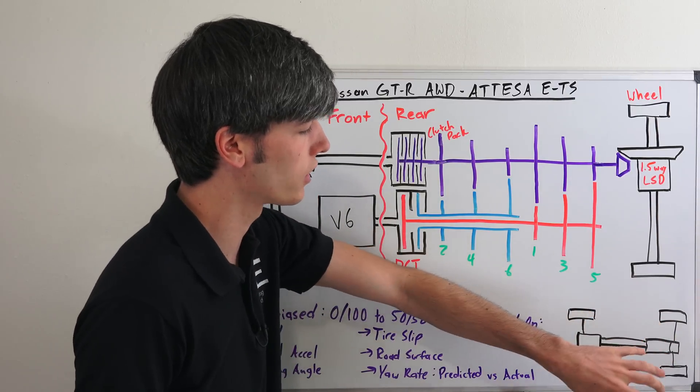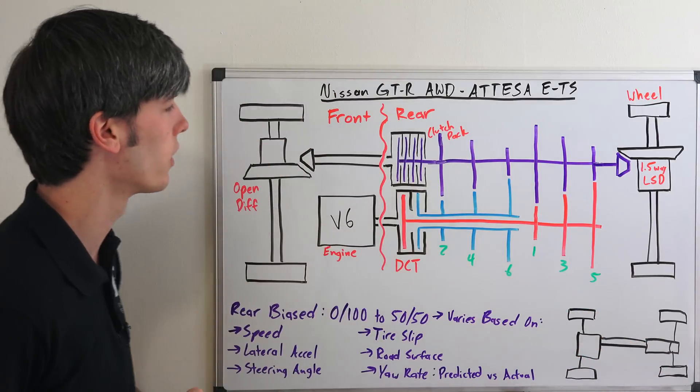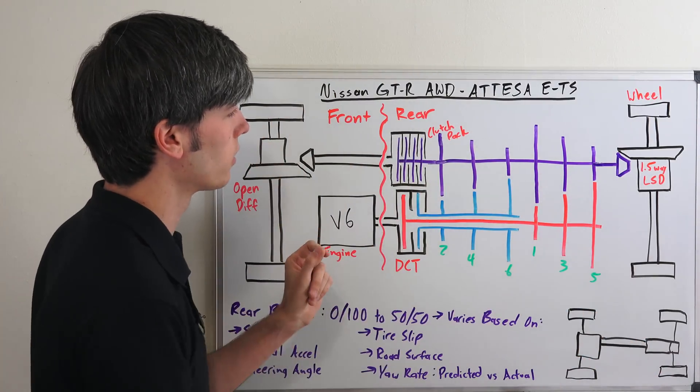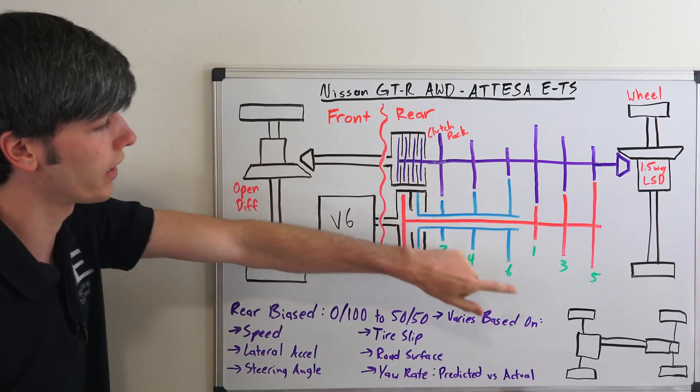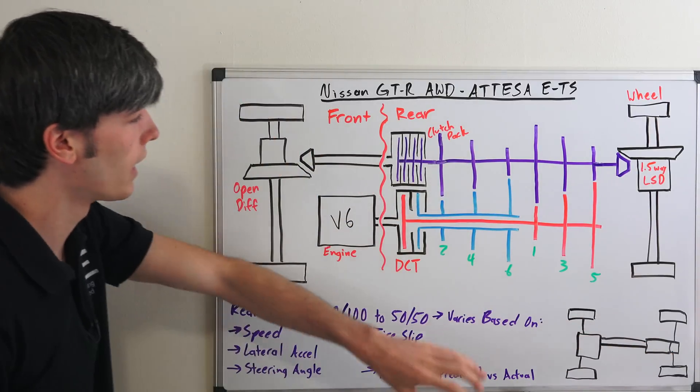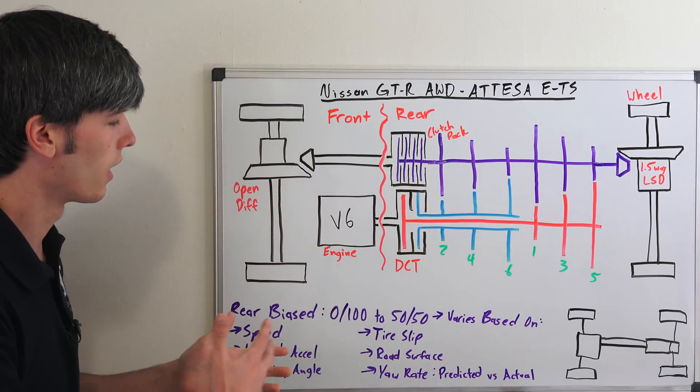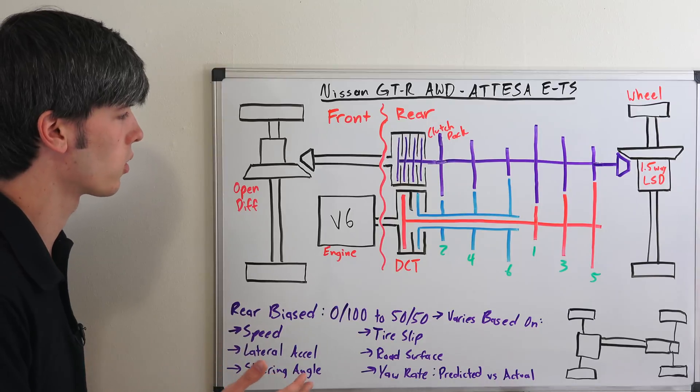But anyways, the point is that it's a rear biased system and it sends most of its power to the back. And then it can choose whether or not it wants to send power to the front. And so here's kind of a demonstration of what this may look like. Now I don't know what the inside of this transaxle actually looks like, but this is a simple explanation to kind of see how it works and understand how the torque distribution of this vehicle works.